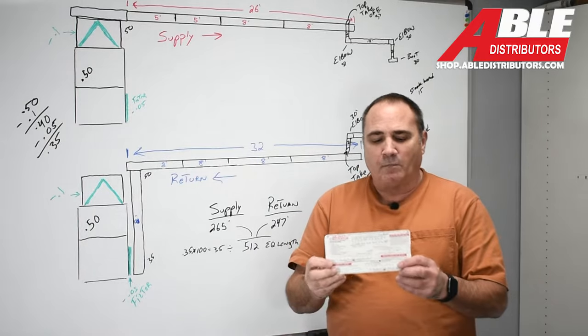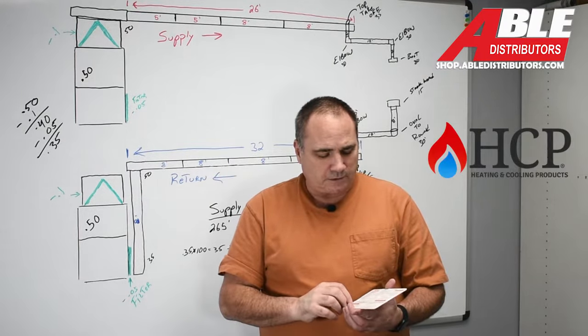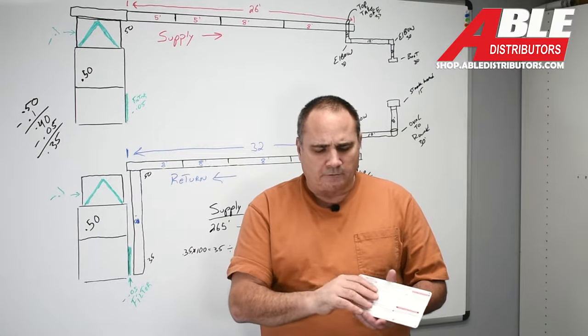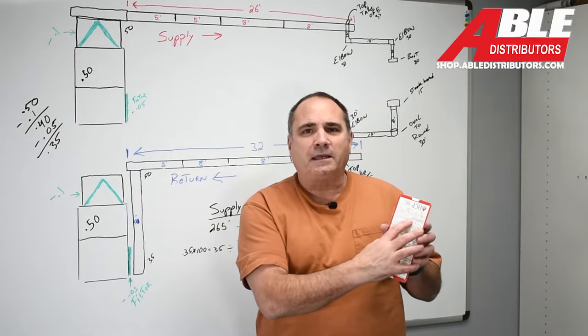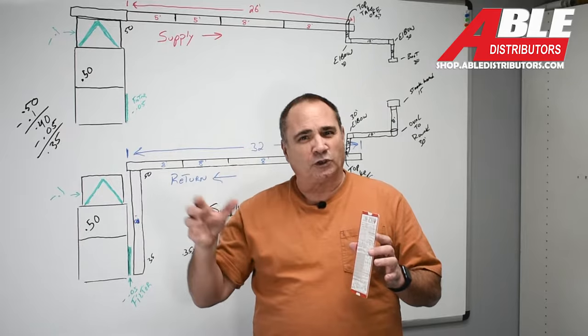And the one I like the most is this one by the company we get our sheet metal from. It's got your typical ductulator on one side, then on the back it's got the equivalent length for every single takeoff or turn.